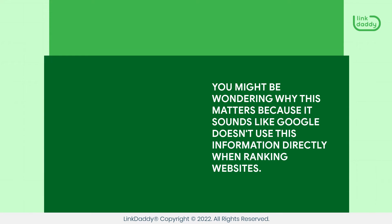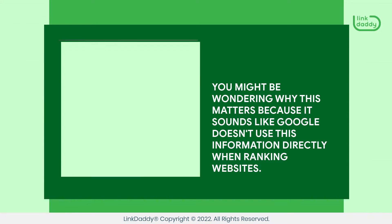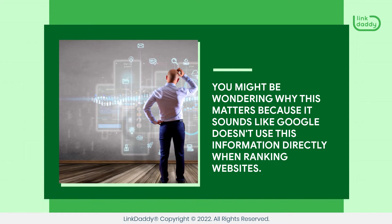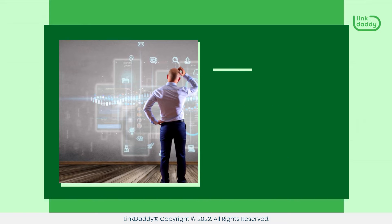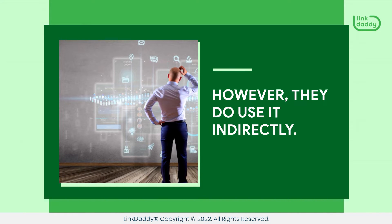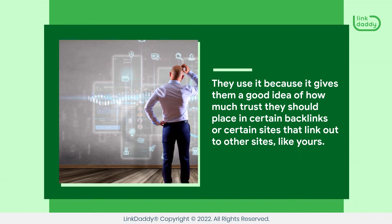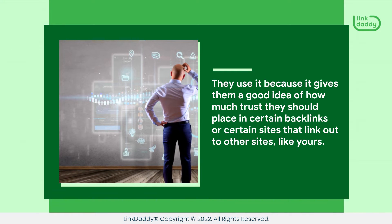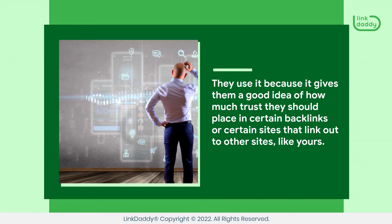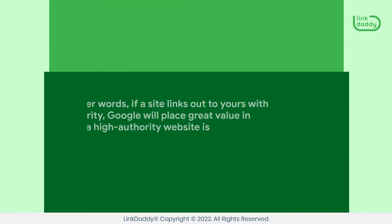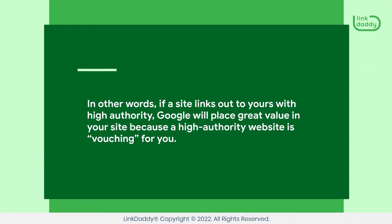You might be wondering why this matters because it sounds like Google doesn't use this information directly when ranking websites. However, they do use it indirectly. They use it because it gives them a good idea of how much trust they should place in certain backlinks or certain sites that link out to other sites, like yours. In other words, if a site links out to yours with high authority, Google will place great value in your site because a high authority website is vouching for you.